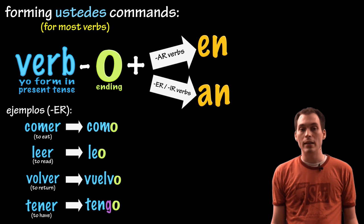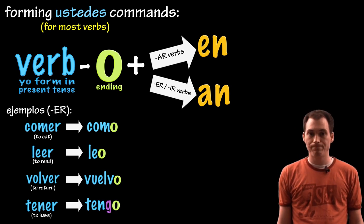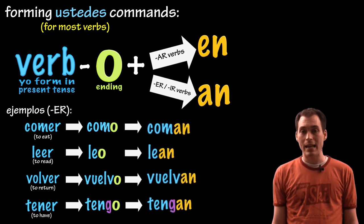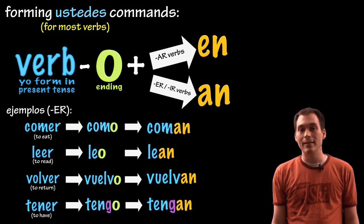So change it into the yo form. You have como, leo, vuelvo, and tengo. Take off the O and you'll add an AN, coman, lean, vuelvan, tengan.